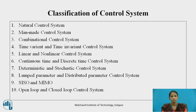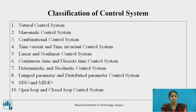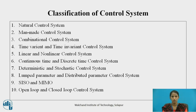This is the classification of control systems. Control systems are broadly classified as follows: natural control system, man-made control system, combinational control system, time-variant and time-invariant control system, linear and non-linear control system, continuous time and discrete time control system, deterministic and stochastic control system, lumped parameter and distributed parameter control system, SISO (single input, single output), MIMO (multiple input, multiple output), and open loop and closed loop control system.